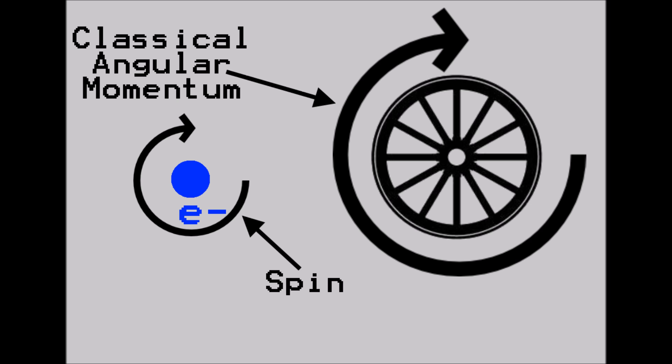Side note number two. All subatomic particles have a quantum mechanical property called spin, and they act very similar to spinning objects in the real world.